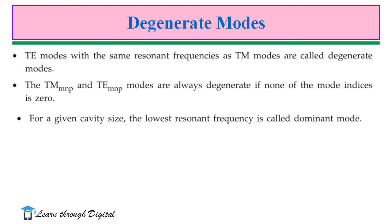TE modes with the same resonance frequencies as TM modes are called degenerate modes. The TM(mnp) and TE(mnp) modes are always degenerate if none of the mode indices is zero. The subscripts m, n, p of TE and TM represent: m is half-wavelength variations along the x direction, n is half-wavelength variations along the y direction, and p is half-wavelength variations along the z direction. For a given cavity size, the lowest resonance frequency is called the dominant mode.